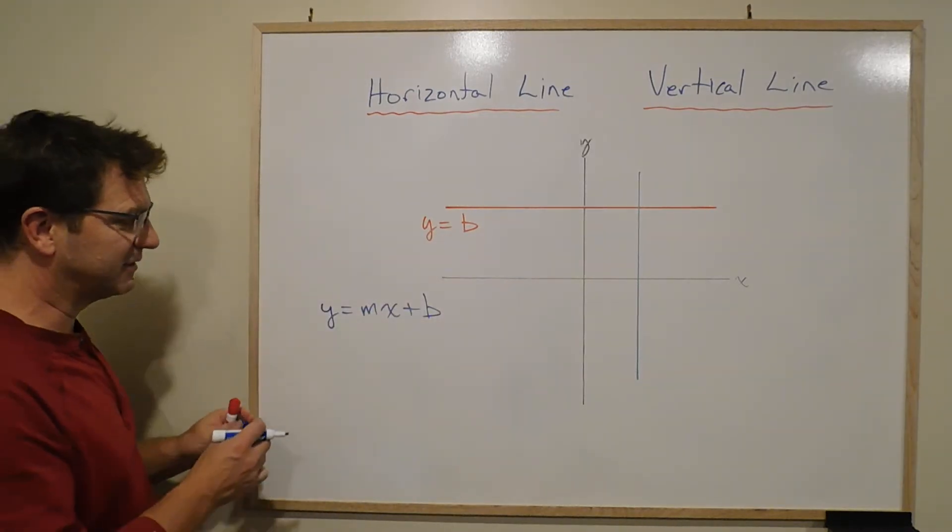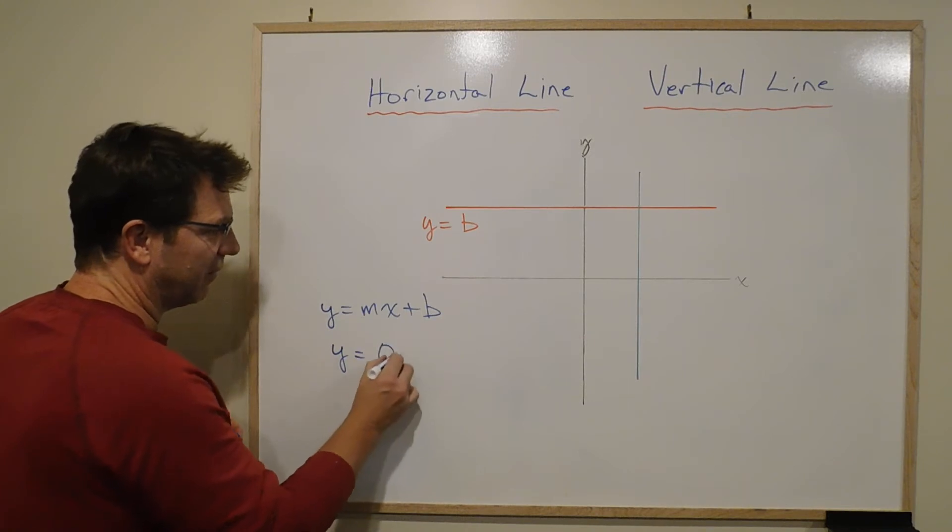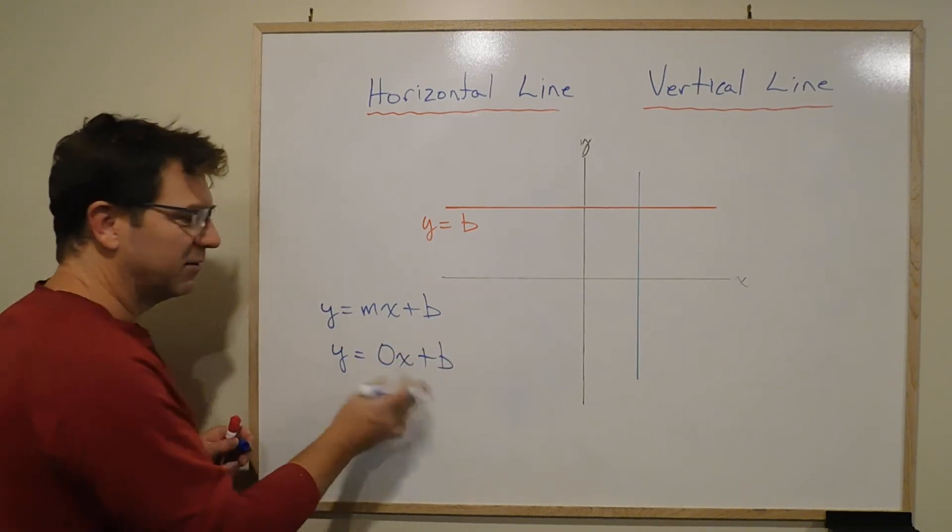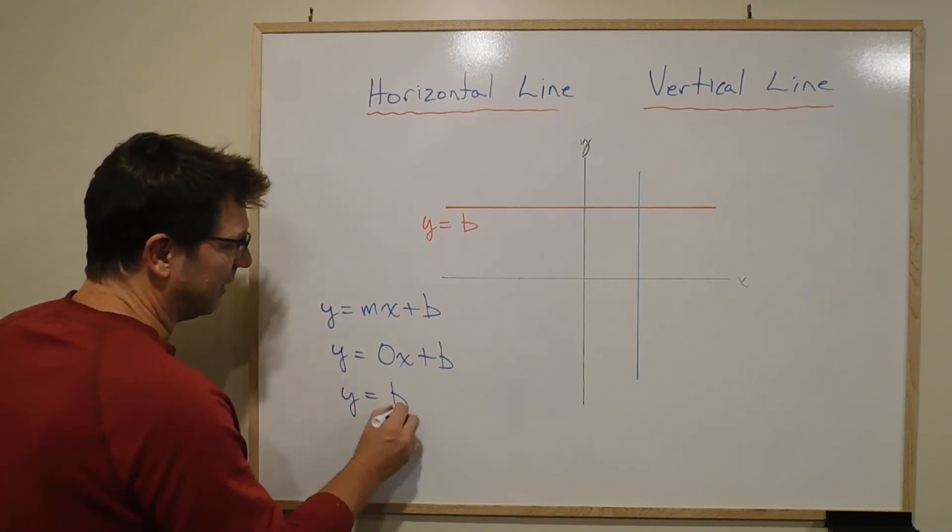And because that slope is 0, it's y equals 0x plus b. But we know 0x, no matter what x is, is 0, so you end up with y equals b.